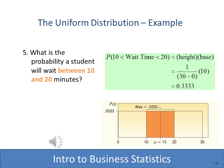What is the probability that a student will wait between 10 and 20 minutes? The area is 10 units, so we have 10 units times the probability of each unit — 0.3333 — giving us a probability of 0.3333.